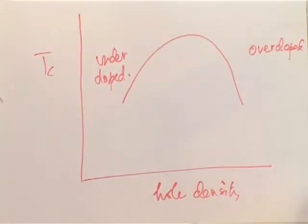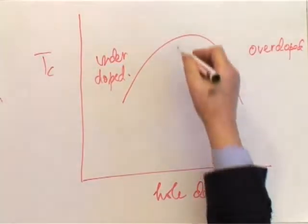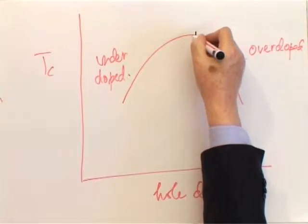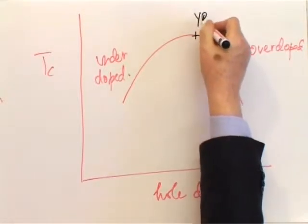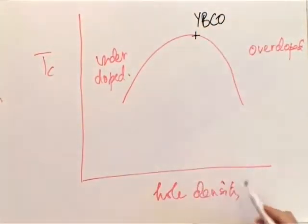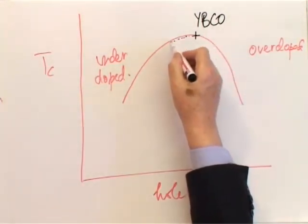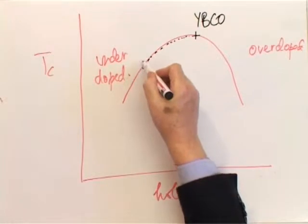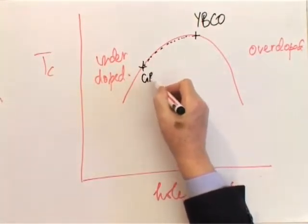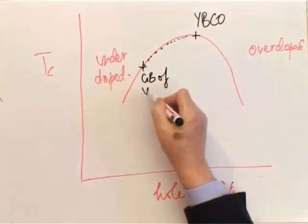When we look at the structure of a grain boundary, we unfortunately find a situation where yttrium barium copper oxide exhibits a maximum doping, and the grain boundary then is on this side. Here's a grain boundary of yttrium barium copper oxide.